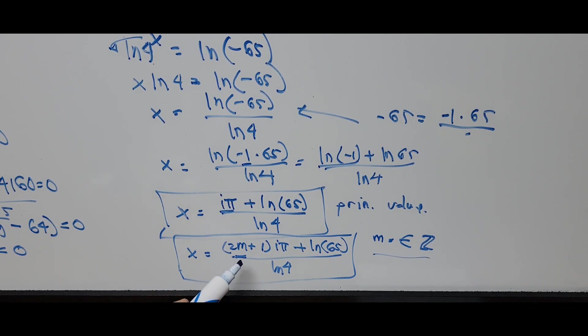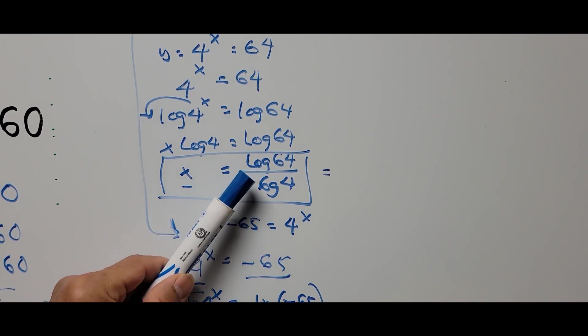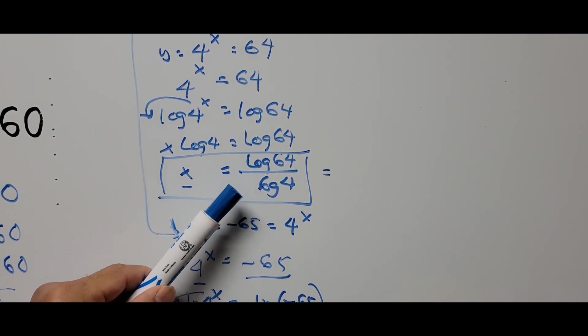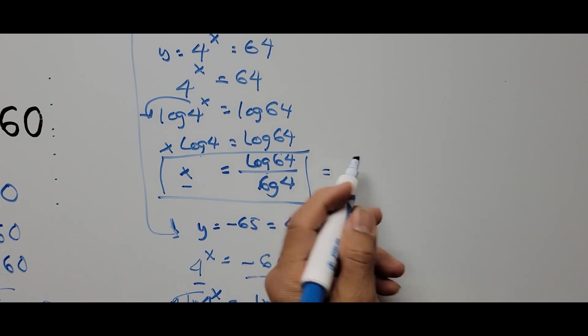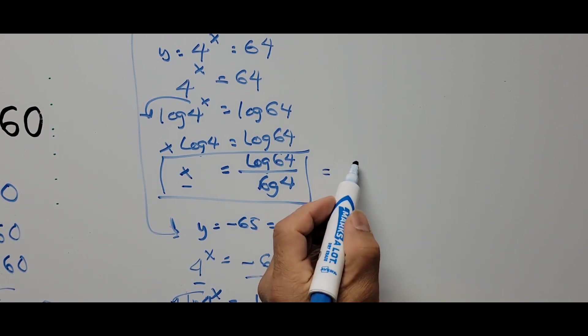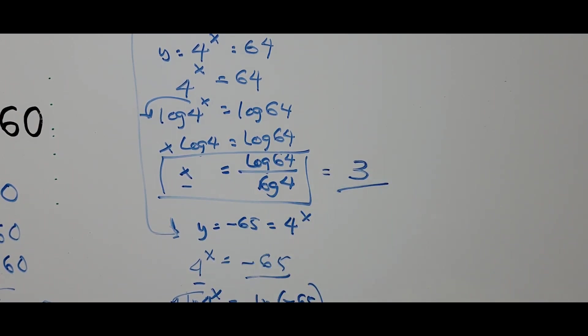Going back to the real value of x: log(64) divided by log(4) equals exactly 3. So the real solution is x = 3.